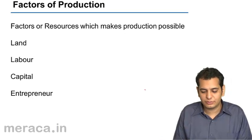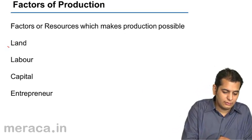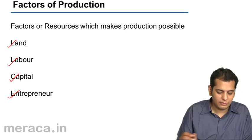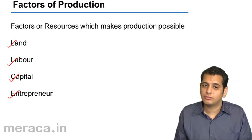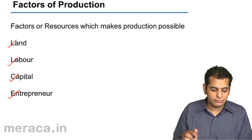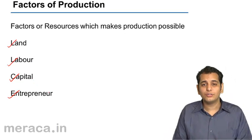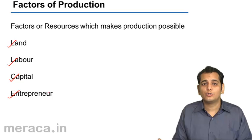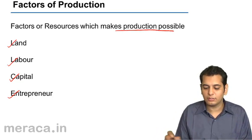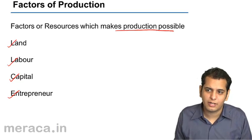The factors of production are land, labor, capital, and entrepreneur. Land, labor, capital, and entrepreneur together make production possible, so we call them the factors of production.